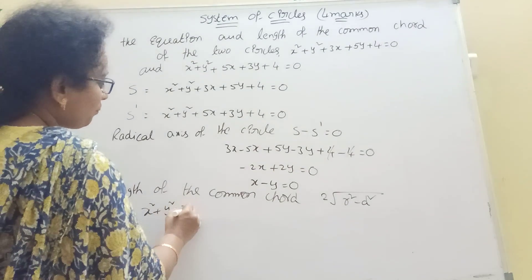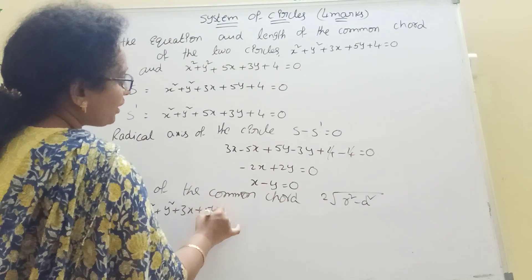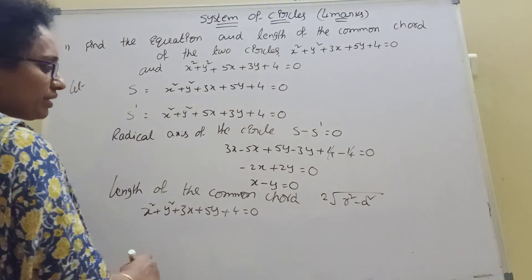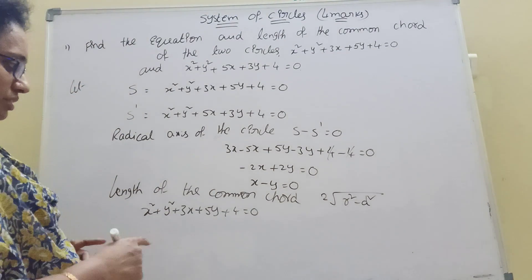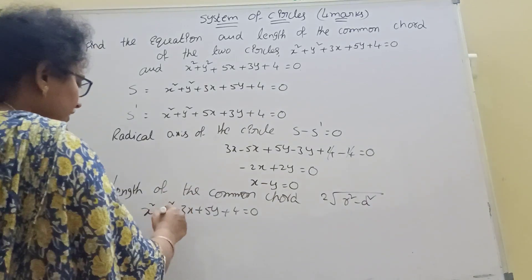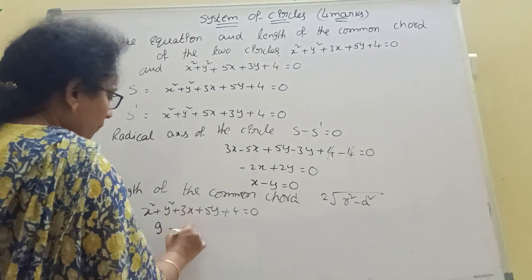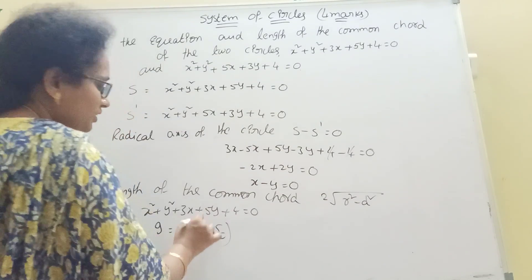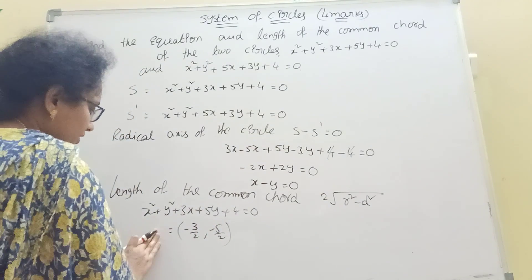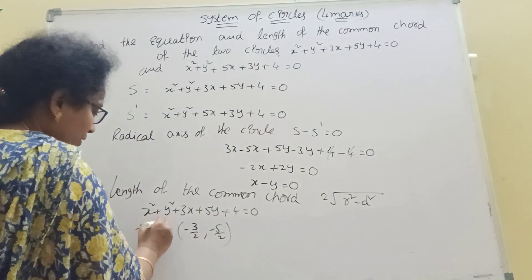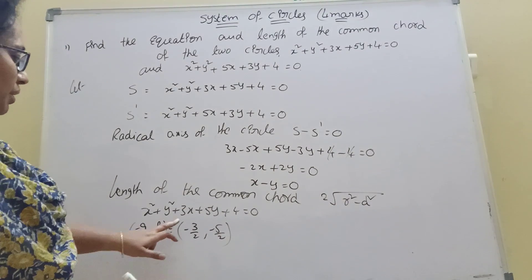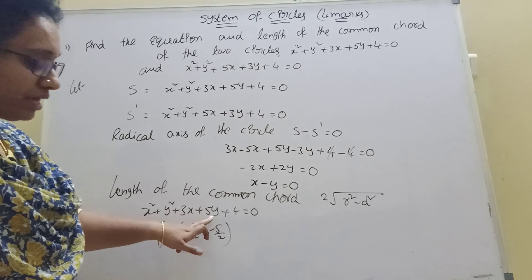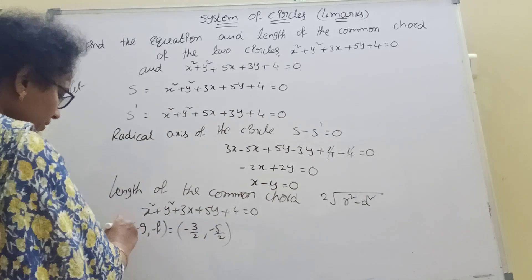From x² + y² + 3x + 5y + 4 = 0, we identify g and f. Center is at (minus g, minus f). g = 3/2, so minus g = minus 3/2. f = 5/2, so minus f = minus 5/2. Center is at (minus 3/2, minus 5/2). Radius r = root of g² + f² minus c.